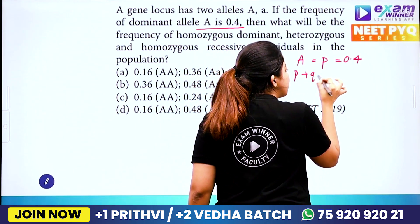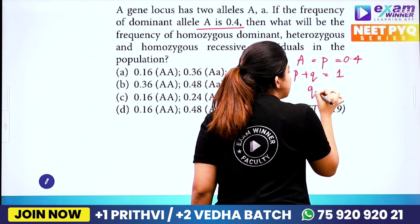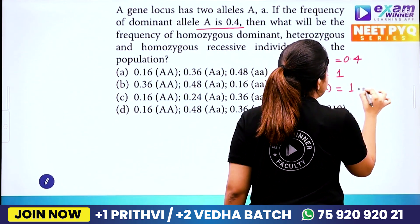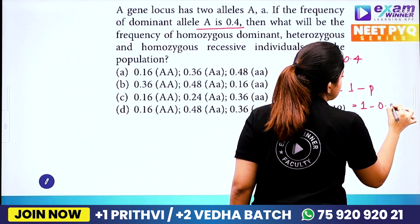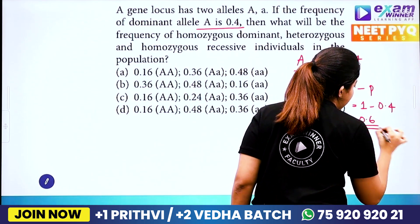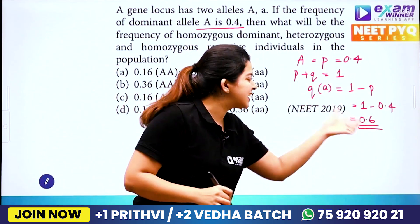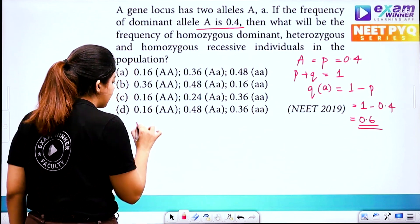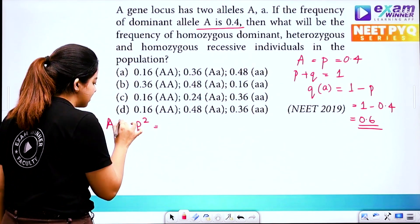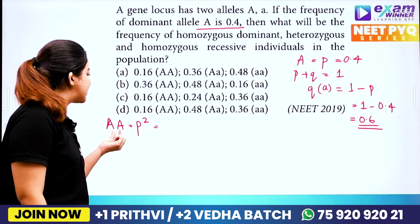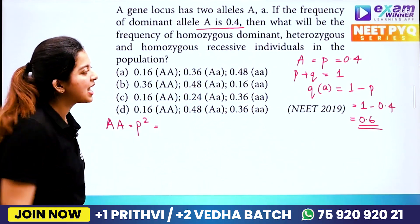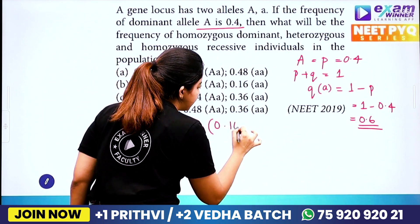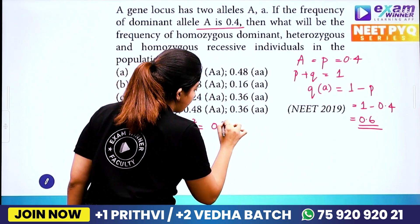We know that P plus Q equals 1. Q is the frequency of small a, so Q equals 1 minus P, that is 1 minus 0.4, which equals 0.6. So small a equals 0.6. For homozygous dominant, we calculate P squared. P squared means AA. P equals 0.4, so 0.4 squared equals 0.16.